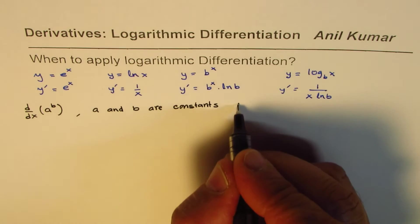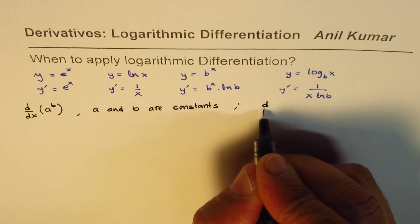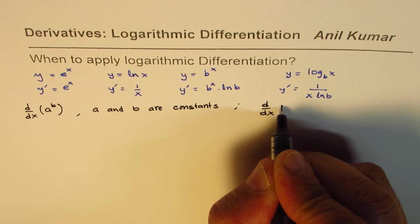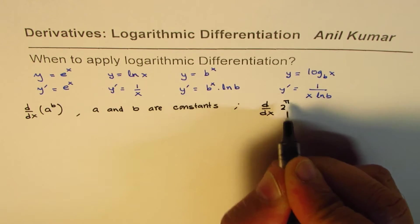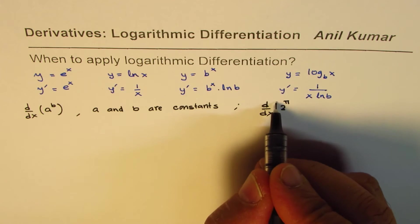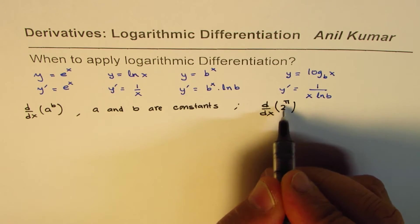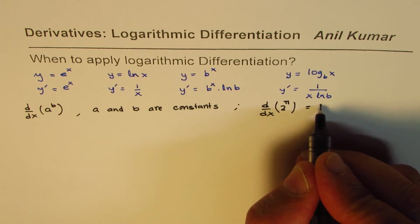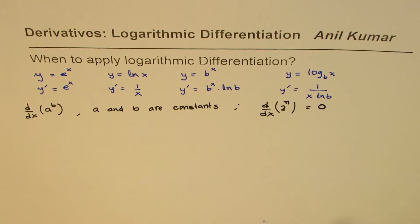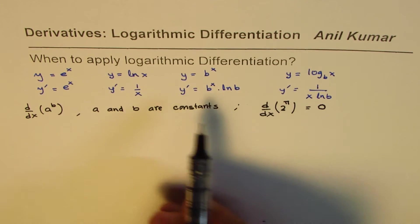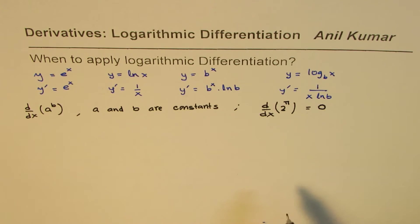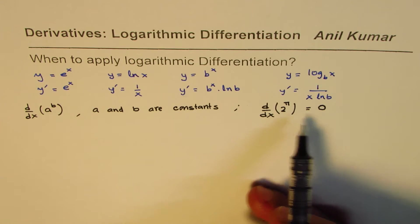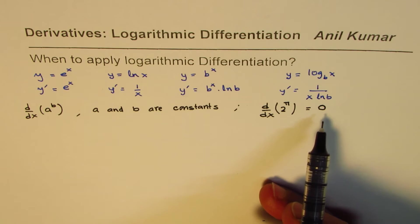For example, finding the derivative of 2 to the power of pi. As you can see, 2 and pi are both constants. The derivative of a constant is always zero, so here we do not apply any logarithmic rules. We know the derivative of a constant is zero, and that's what you get.